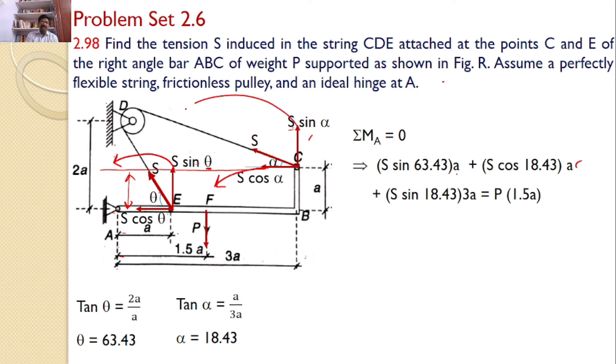And then S sin alpha, this also will introduce a moment in the counterclockwise direction. Alpha value is 18.43. S sin 18.43 into the line of action at a distance of 3a. Hence S sin 18.43 into 3a is equal to the force P into the perpendicular distance 1.5a.